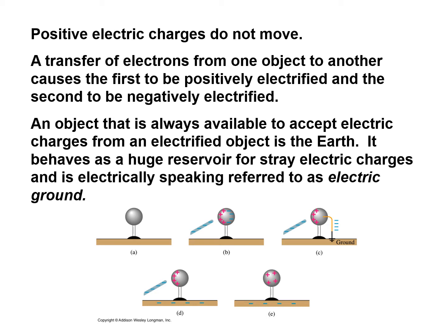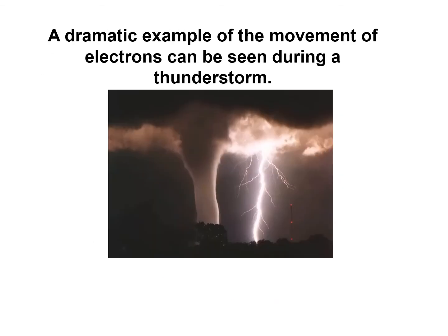One object always available to accept electric charges from an electrified object is the Earth itself — it behaves as a huge reservoir for stray electric charges, referred to electrically as electric ground. A dramatic example of the movement of electrons is seen during a thunderstorm, of course, in the form of a lightning bolt.